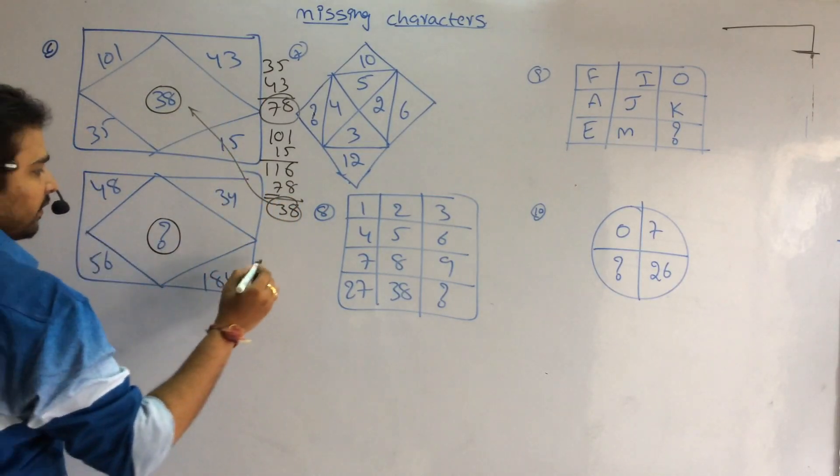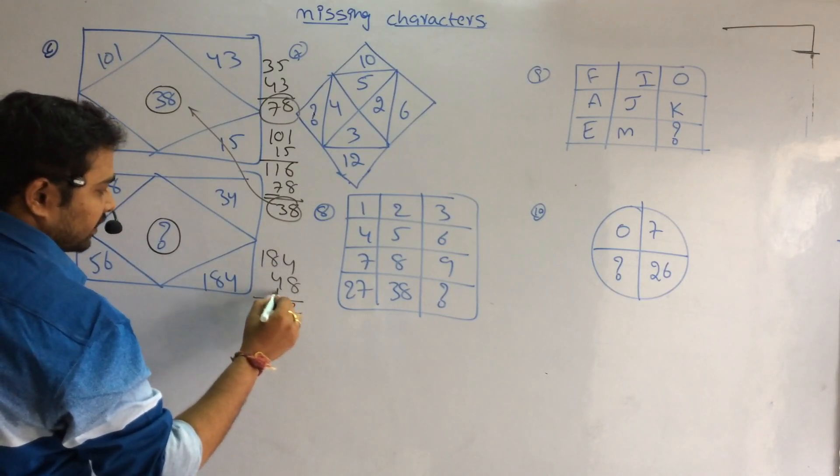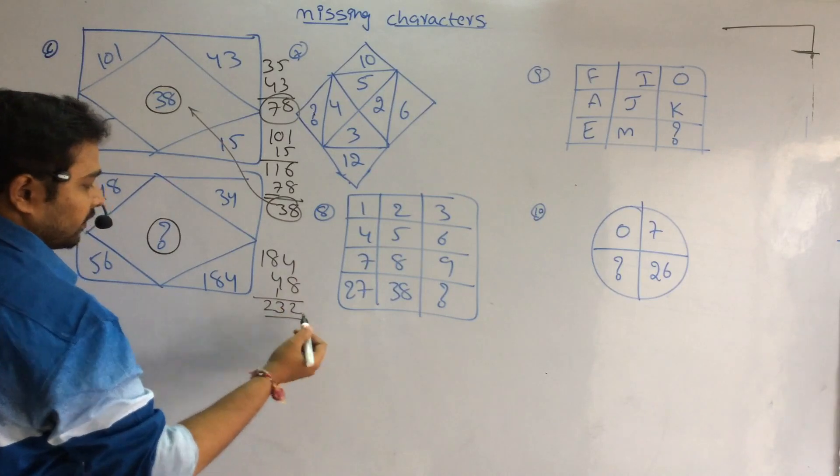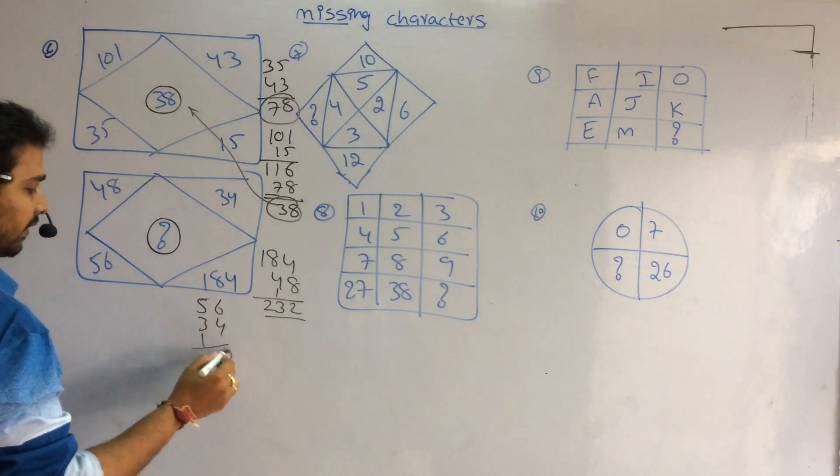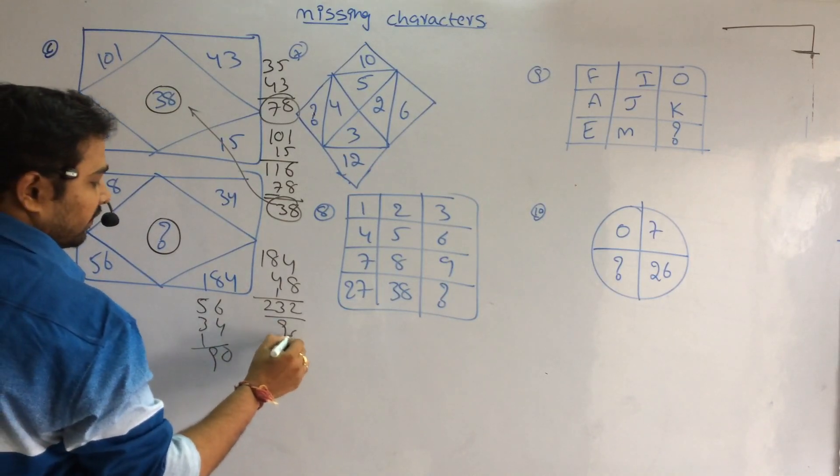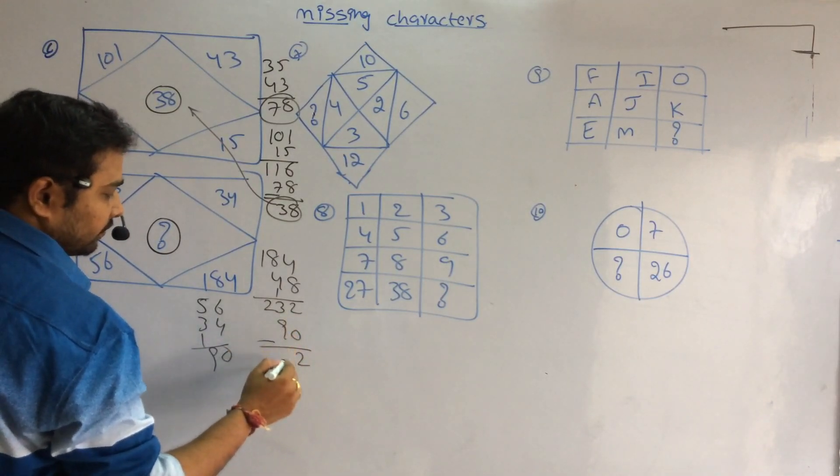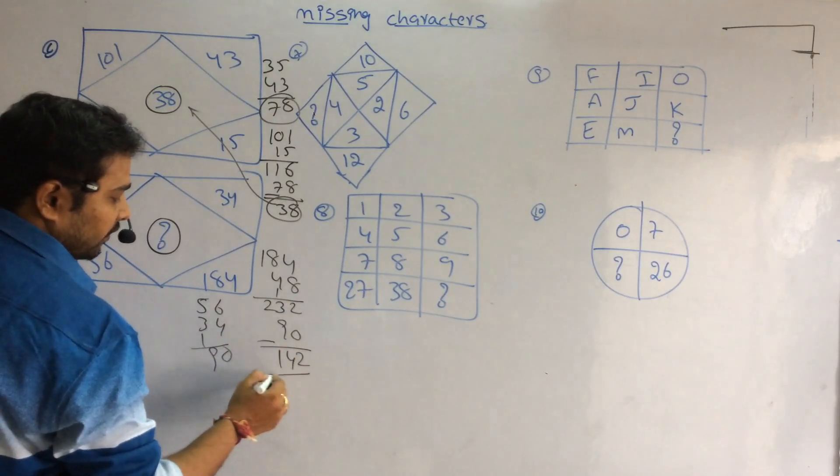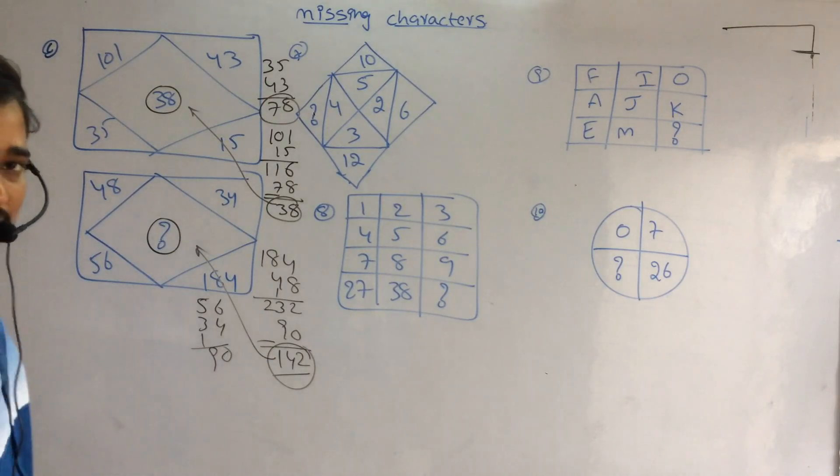In the same way, 184 plus 48 is 232. 56 plus 34 is 90. When we subtract 90 from 232, it is 142. Answer is 142 is my answer.